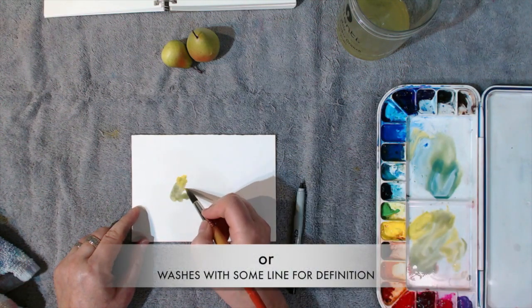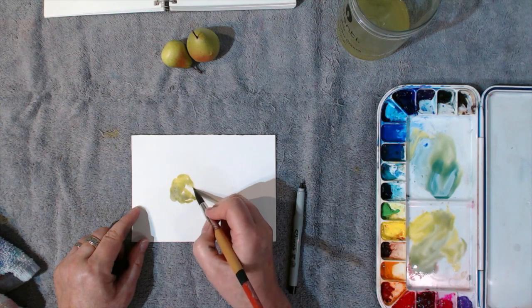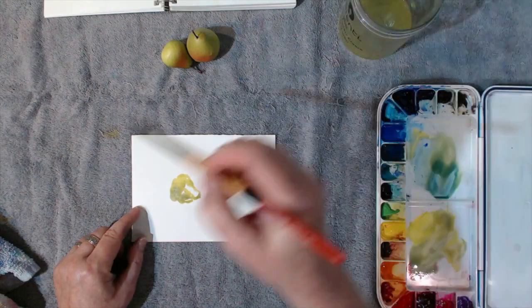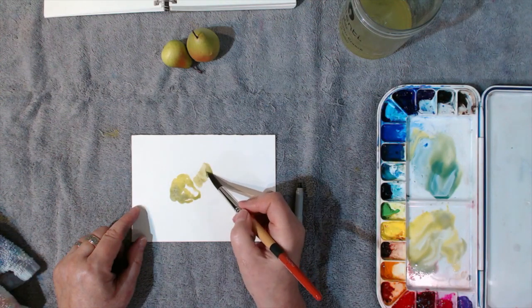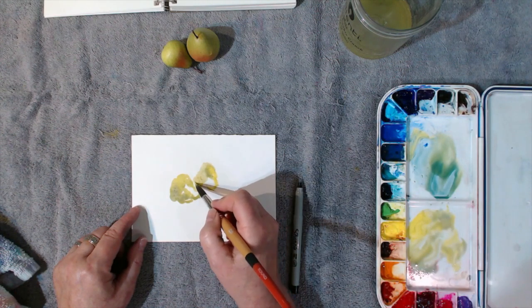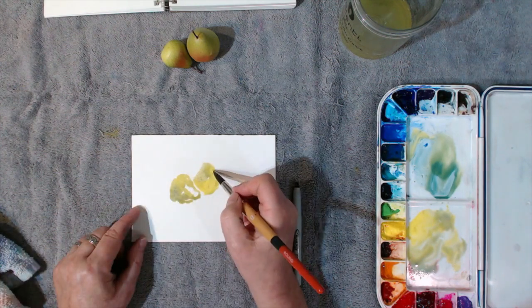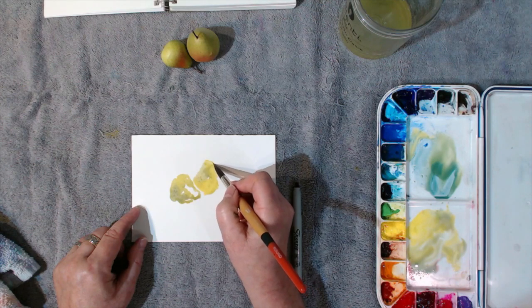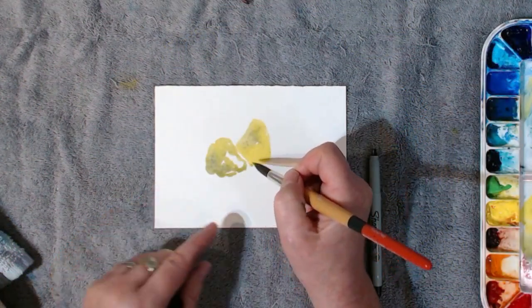We can start again doing our washes first. You see again I'm working quickly and not trying to fill in the entire shape, kind of simulating what would happen if I were traveling and I only have a few minutes to get this down. Maybe I'm even in a moving vehicle like a train and it's bouncing around, so I can't be too perfect.